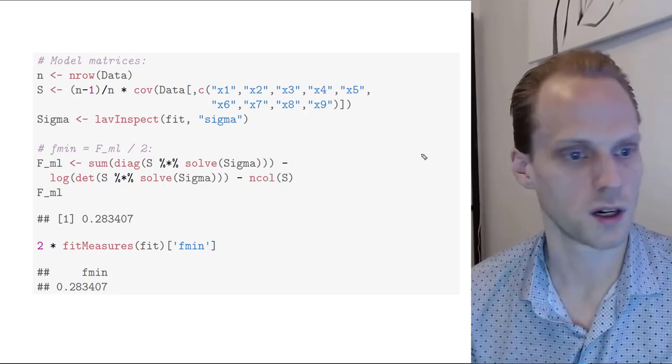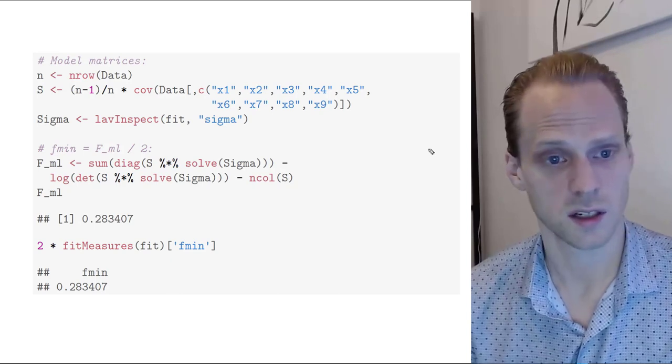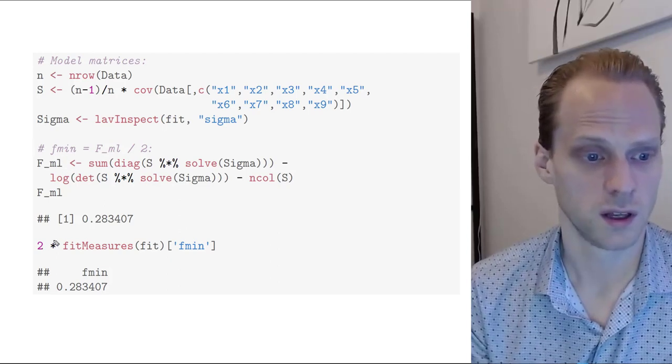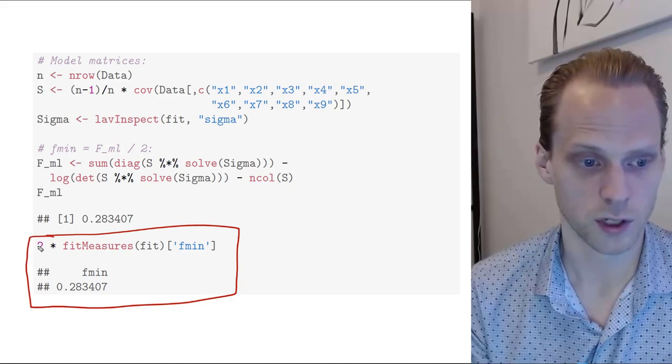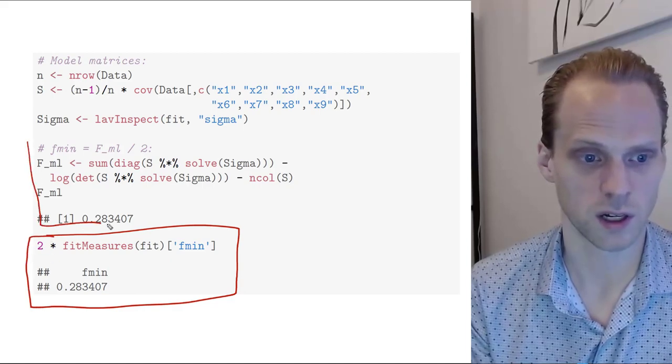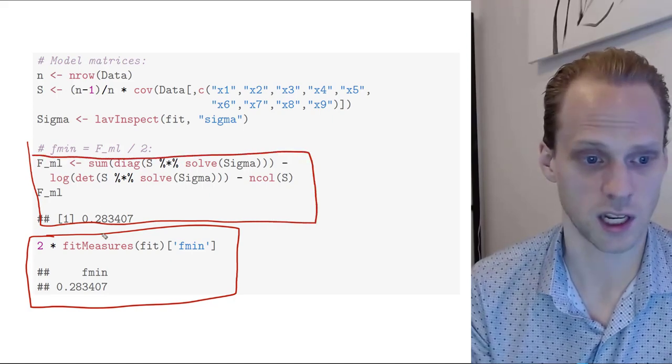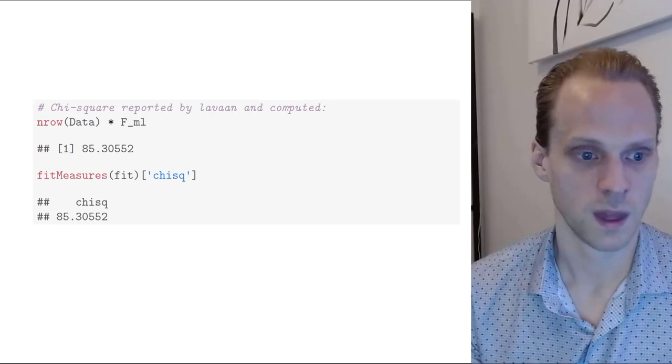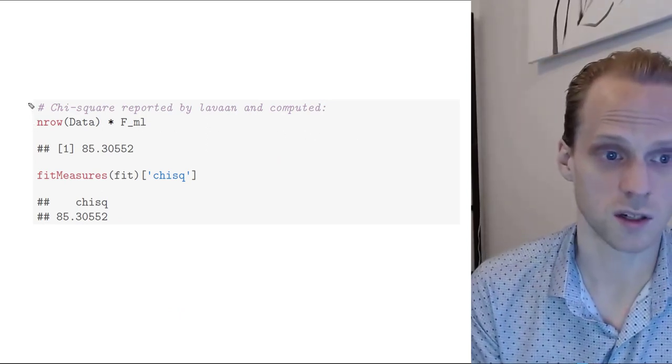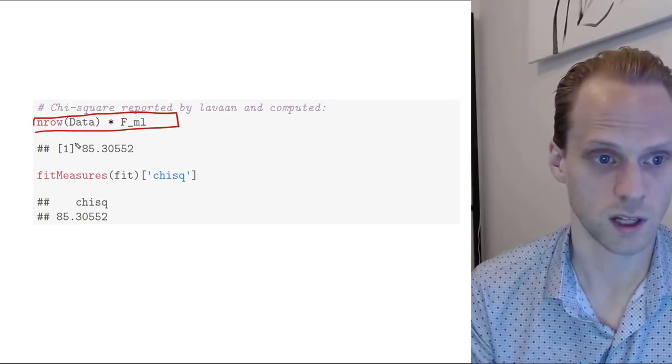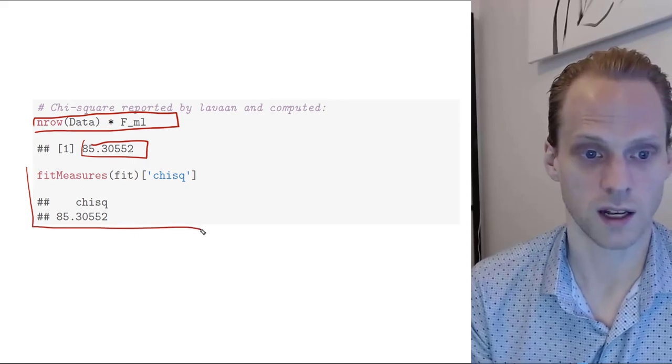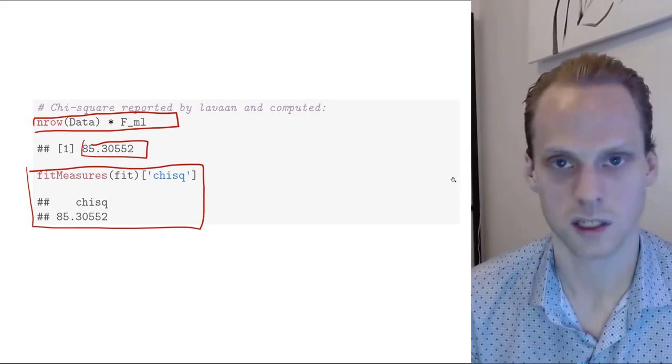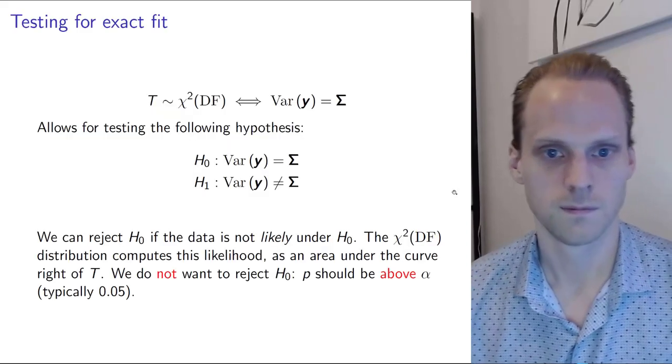Let's look into R to show that indeed this fmin and FML is exactly what you get from software. This is Lavaan code that gives you the fmin reported by Lavaan from the optimizer. Two times this equals what we get from filling in the equation manually. Then we multiply this with n and get 85.3. When you ask for the chi-square test in Lavaan, it's the exact same value. It's not magic, you can obtain this yourself.